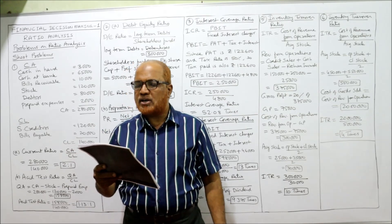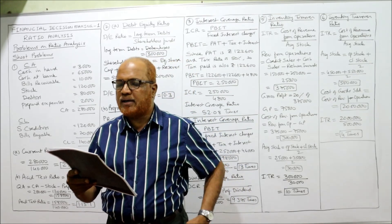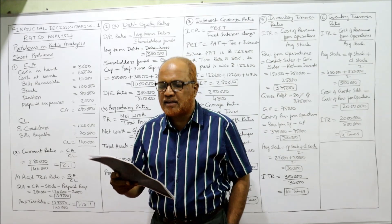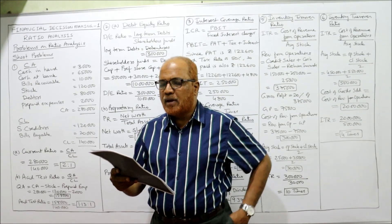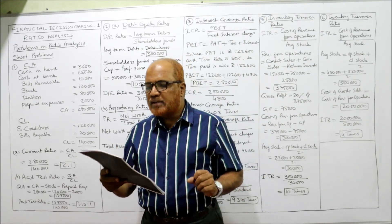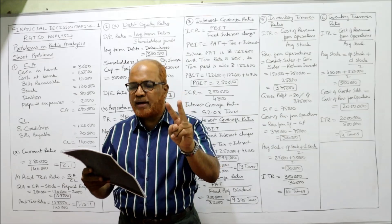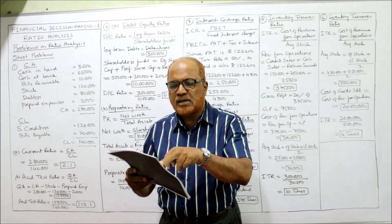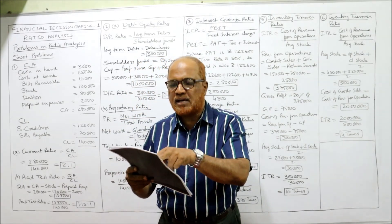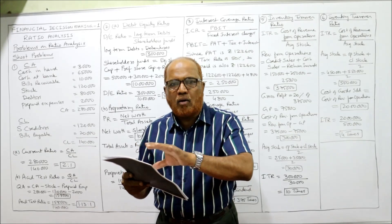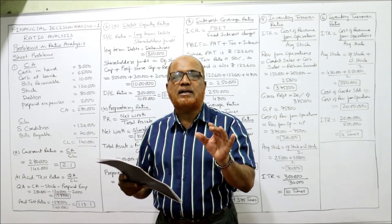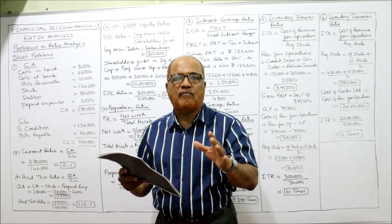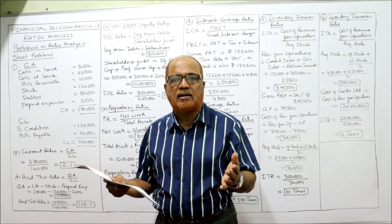The given items are: cash in hand, cash at bank, bills receivable, stock, debtors, prepaid expenses, sundry creditors, and bills payable. Out of these items, only two are current liabilities — creditors and bills payable. Remaining all items are current assets: cash in hand, cash at bank, bills receivable, stock, debtors, and prepaid expenses.